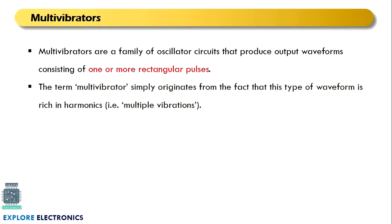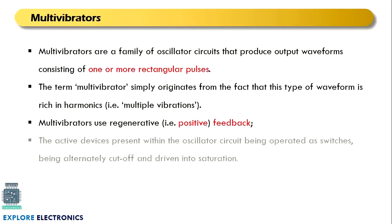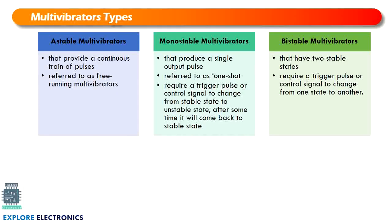The name multivibrator originated from the type of waveform it produces, which is rich in harmonics. Multivibrators have a positive feedback and also contain active devices within the oscillator circuit which are operated as switches, alternatively cut off and driven into the saturation region.